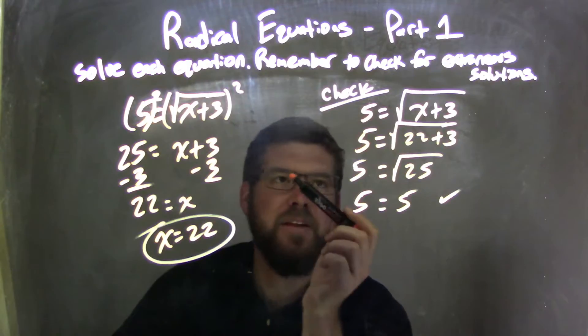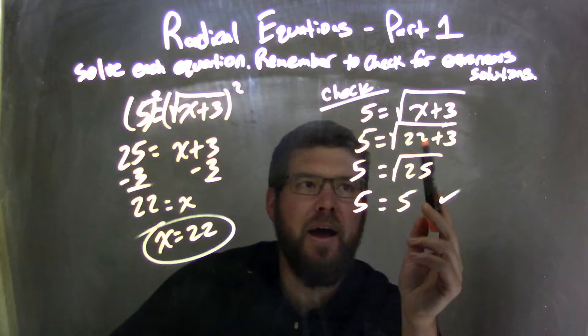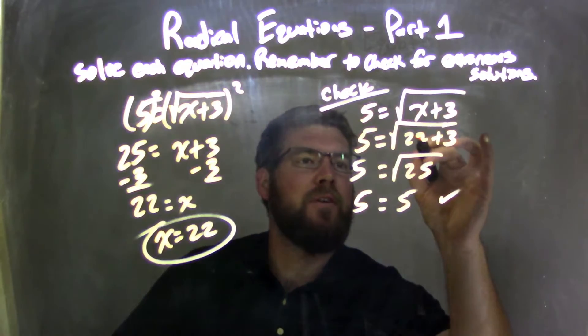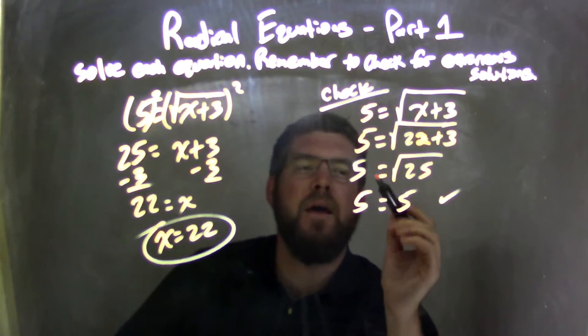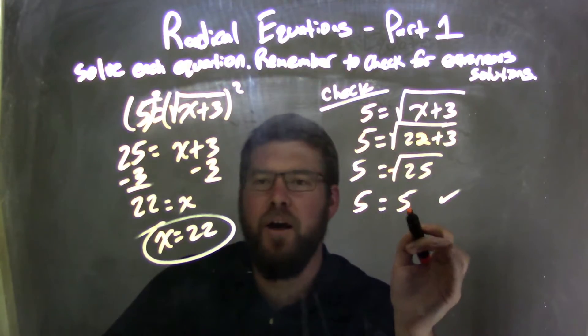I then check. I took my original equation. I then substitute 22 in for x. I then simplify. 22 plus 3 is 25. The square root of 25 ended up being 5. Left and right hand sides are equal, so we're good. No extraneous solutions.